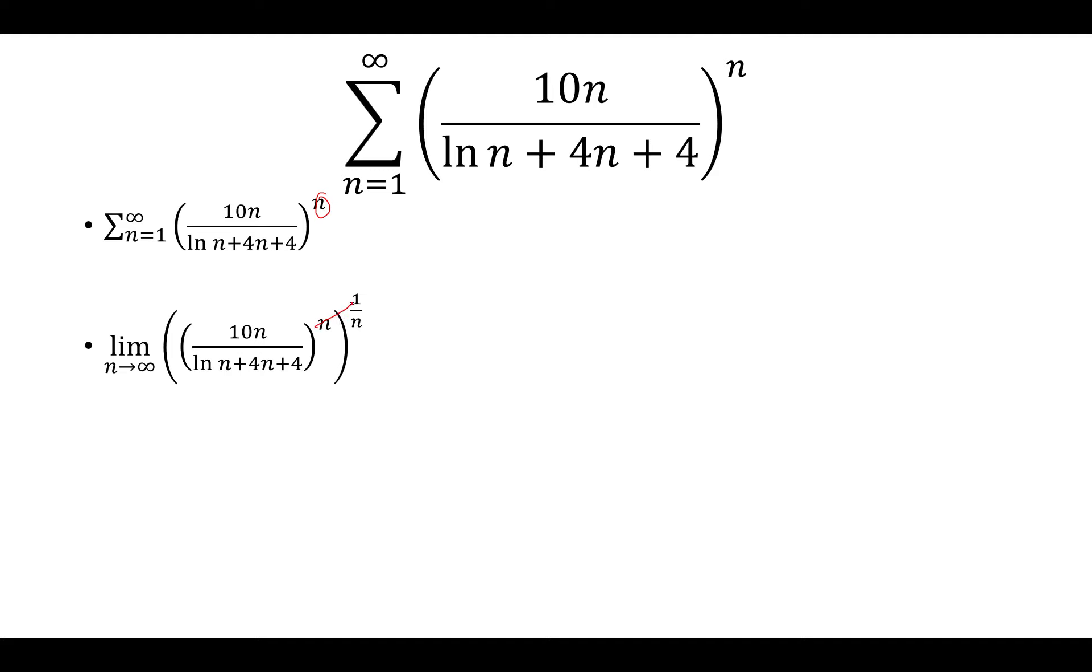So the exponents are going to cancel, and so we're just looking at 10n over natural log of n plus 4n plus 4. And for that, the way to solve this is to divide everything by n.